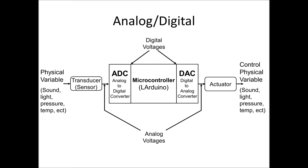The Arduino is completely digital — everything it does is in the digital domain, a whole series of ones and zeros. The thing is, the real world is analog, not digital at all. On the left we have our physical variables, things that we can measure: things like sound, light, pressure, temperature. There are a whole lot of different physical variables that we could measure.